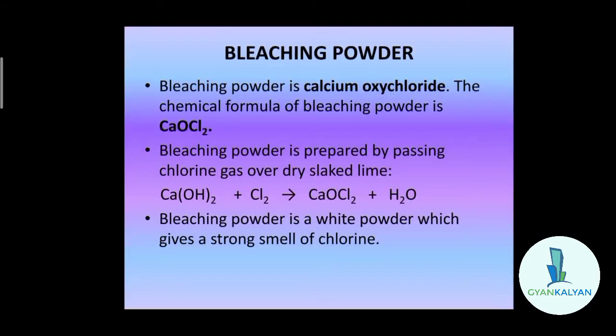Let us start with the chemical compound bleaching powder. Most of us have heard about bleaching powder. Bleaching powder is calcium oxychloride. The chemical name of bleaching powder is calcium oxychloride or calcium hypochlorite, and the chemical formula of bleaching powder is CaOCl2. Let us see the preparation.